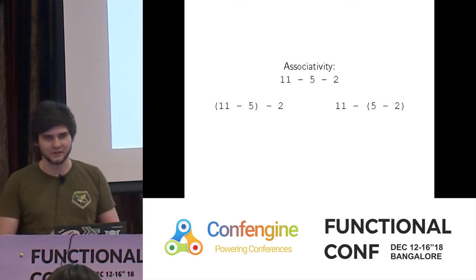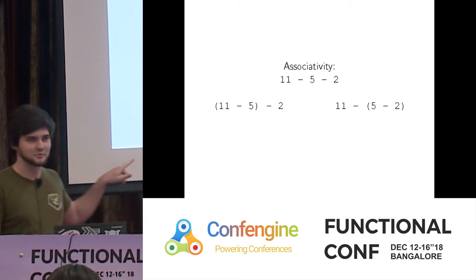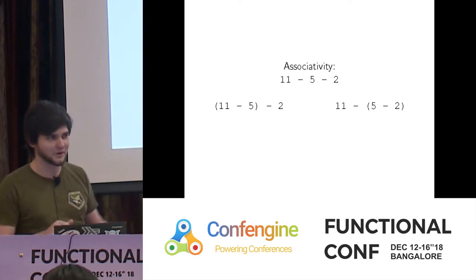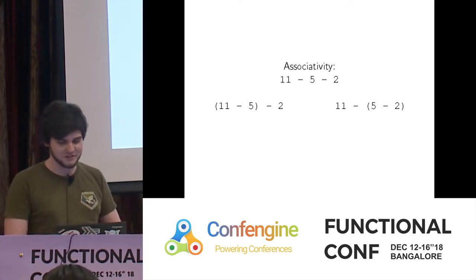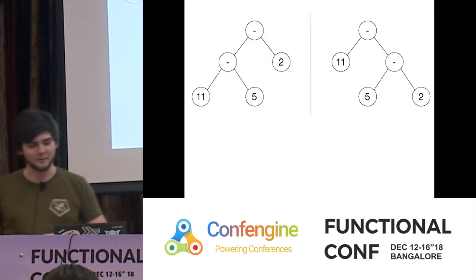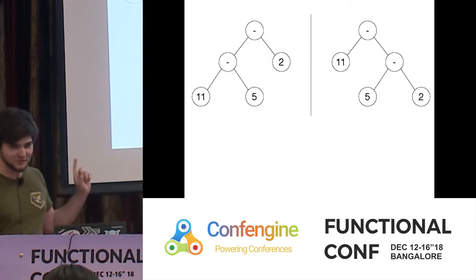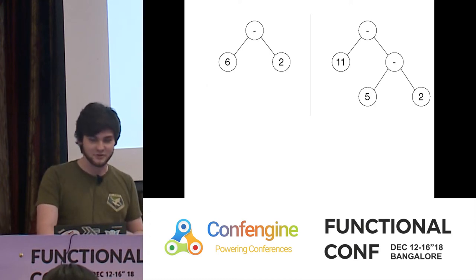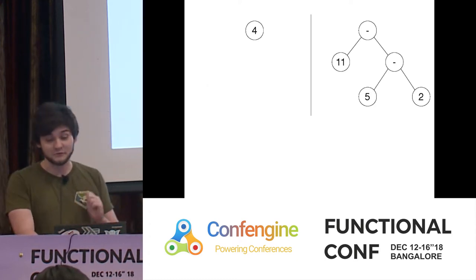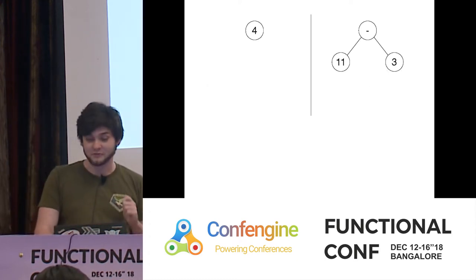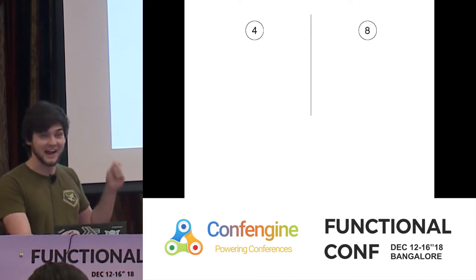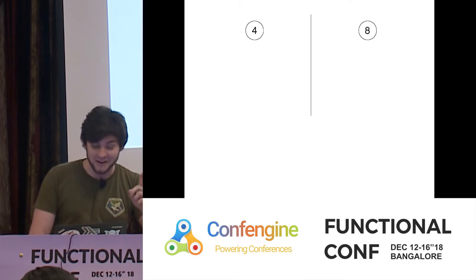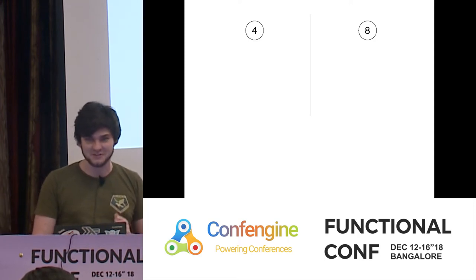For associativity, drawing the computation trees shows two very different answers. If we subtract five from eleven we get six, then subtract two to get four. But if we first subtract two from five to get three, then subtract that from eleven, we get eight. Eight is not four. So subtraction doesn't have associativity either.